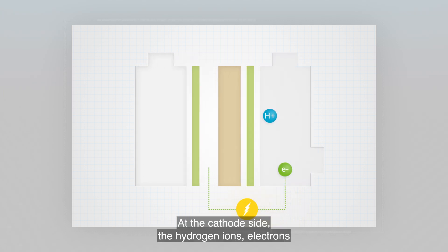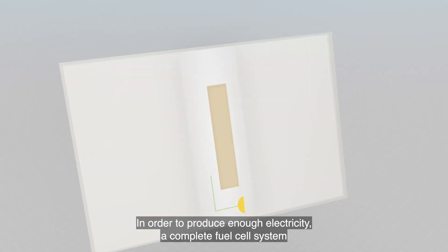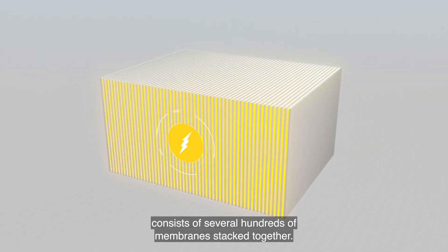At the cathode side, the hydrogen ions, electrons and the oxygen in the air combine to produce water. In order to produce enough electricity, a complete fuel cell system consists of several hundreds of membranes stacked together.